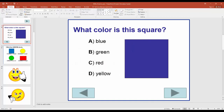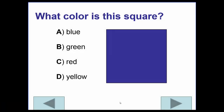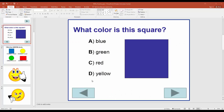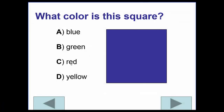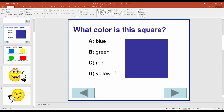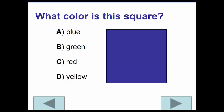Now if we view this in presentation mode, blue takes us to the correct slide, and selecting any incorrect answer like red takes us to negative feedback. However, depending on which answer is selected, we have a navigational dead end — there's no way to go back to the question or move forward, so we need to add navigation to both the happy and sad face feedback slides.